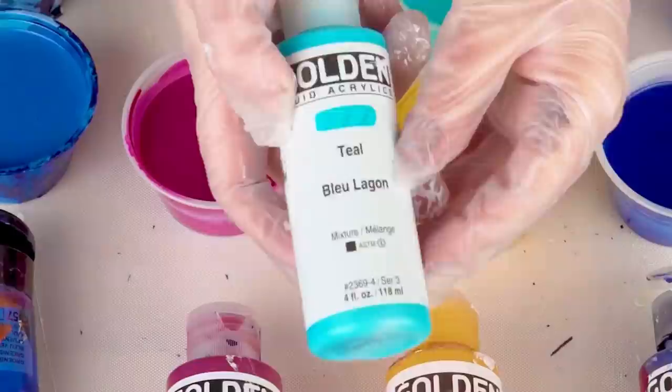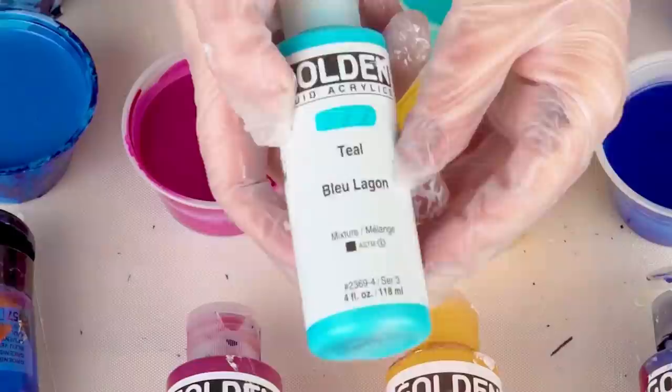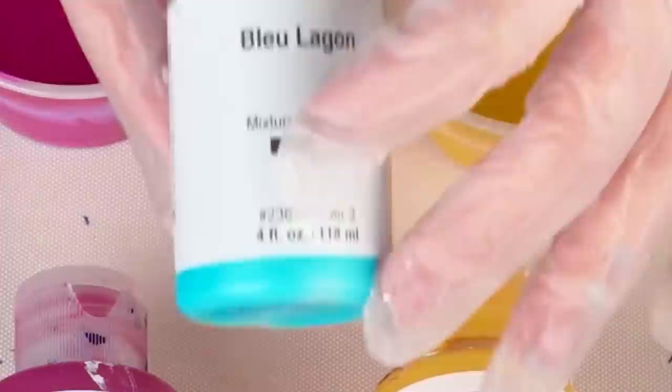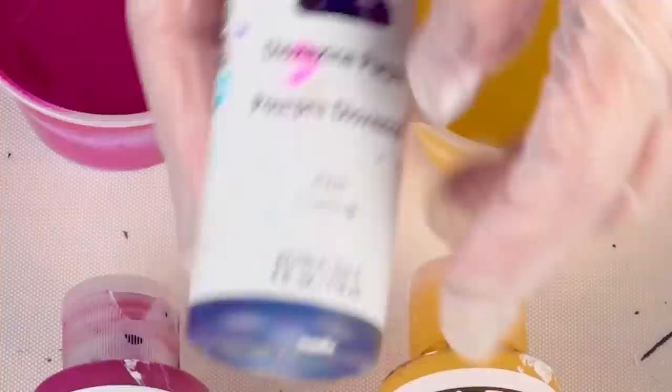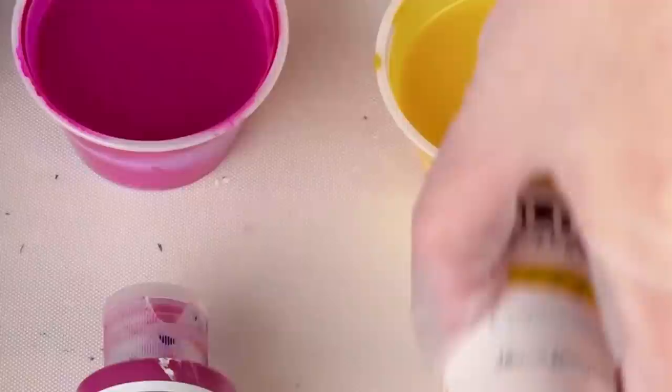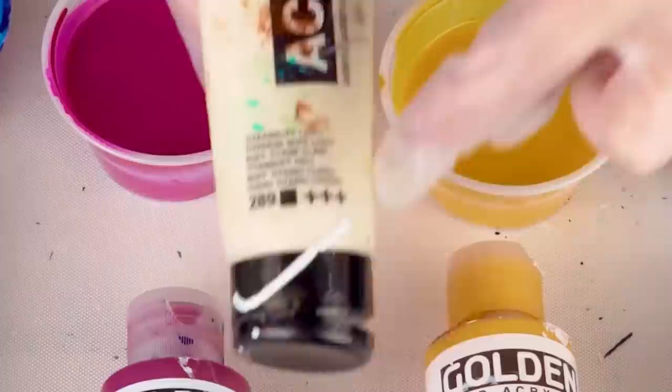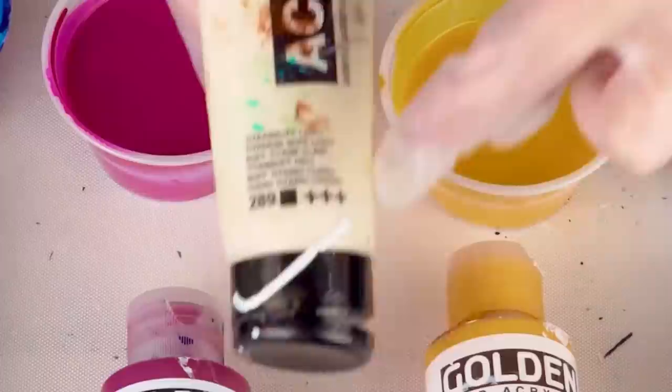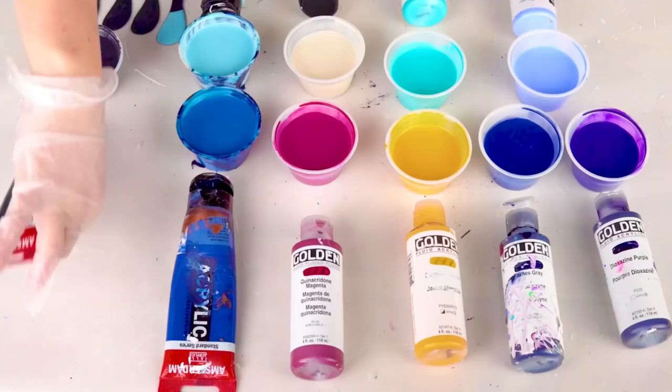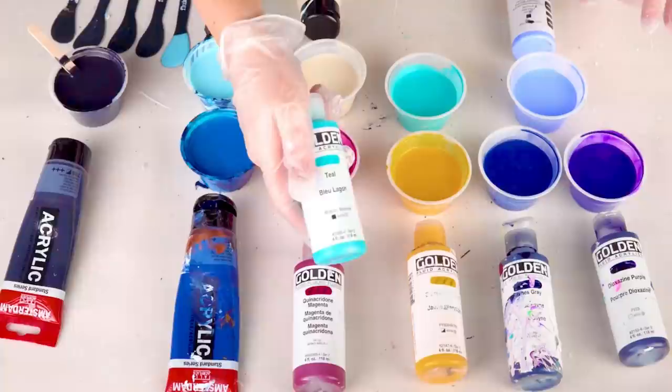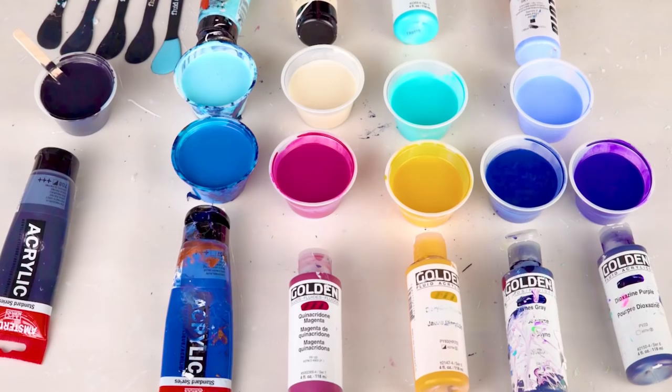You can tell an opaque paint—a lot of brands show you either a filled-in square. Like Golden, when it's totally filled in, that means it's opaque. When it's empty, that means it's transparent. And when it's half and half, it means semi-opaque. Amsterdam has the same thing where they have the filled-in squares or the half squares. Basically though, you can tell if a paint is opaque if it just looks like there's white added to it.